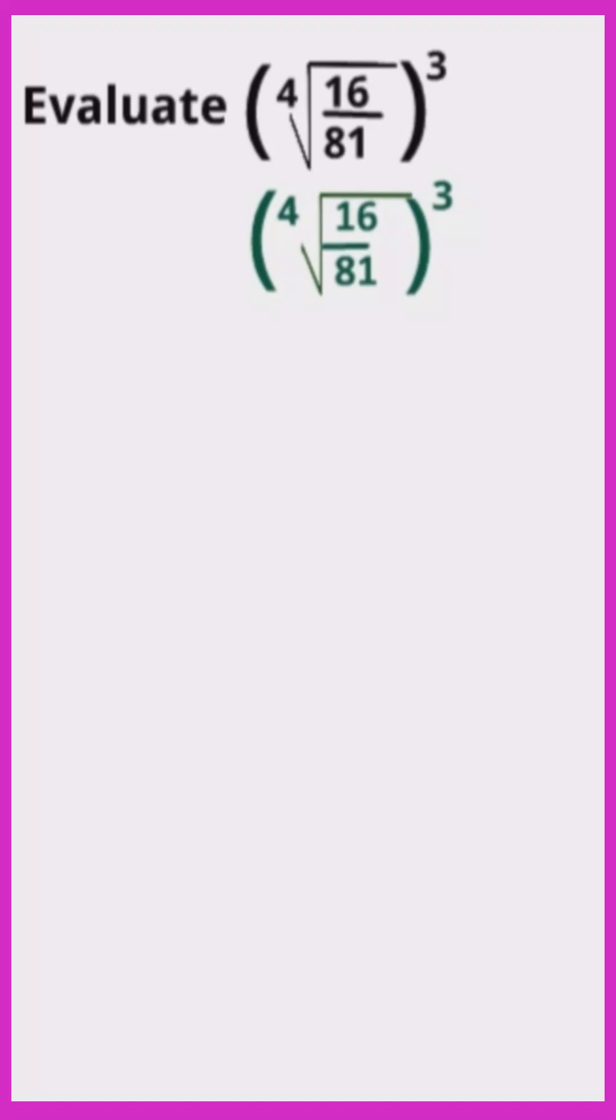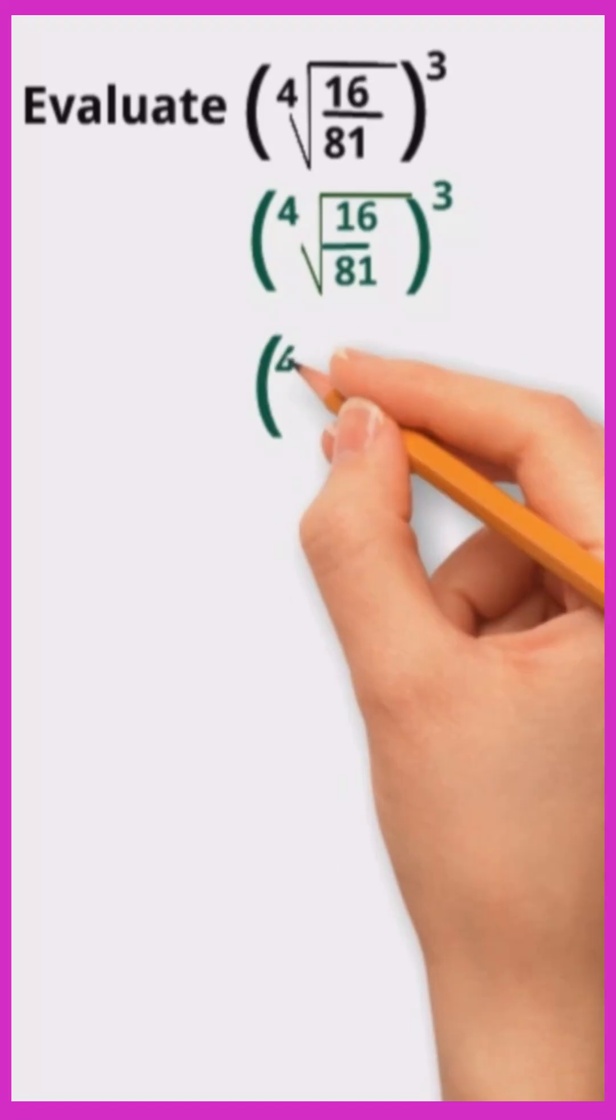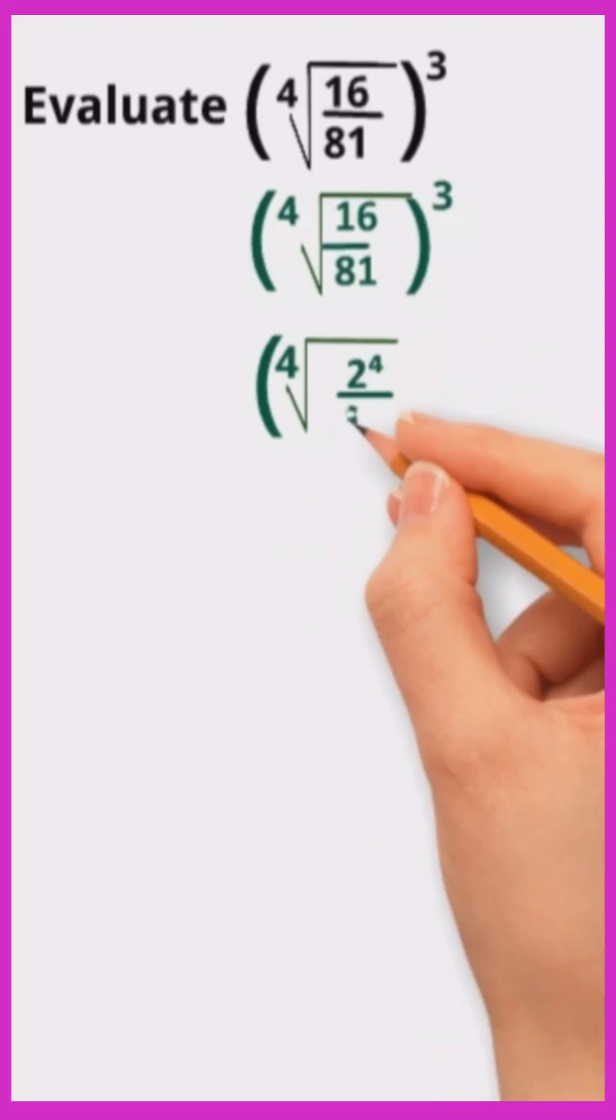Now let's look at the fraction itself, 16 over 81. Can anyone tell me what special powers these numbers have? 16 is 2 to the fourth power. 81 is 3 to the fourth power. So we can rewrite 16 over 81 as 2 to the fourth divided by 3 to the fourth.